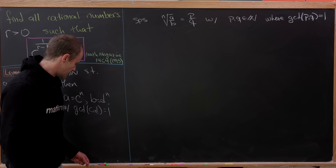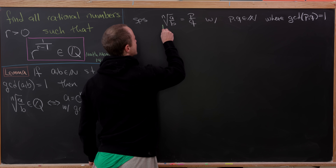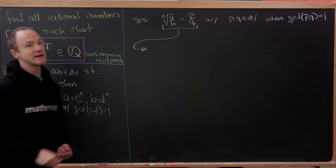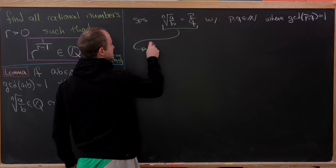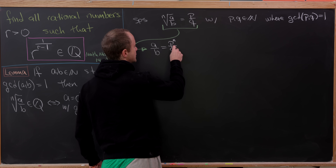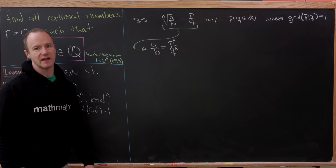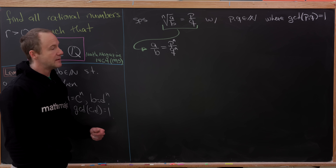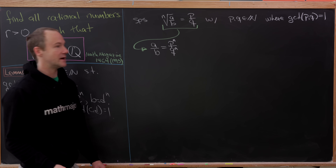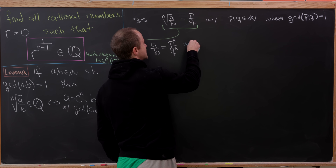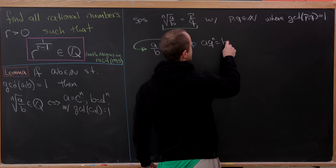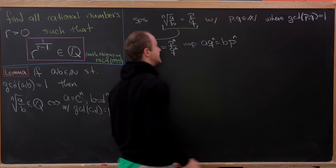We can take this defining equation of p and q and raise it to the nth power. That gives us a over b is equal to p to the n over q to the n. We might be tempted to immediately say that a equals p to the n and b equals q to the n, but we can't do that quite yet. Let's cross multiply to get an equation within the integers: a times q to the n is equal to b times p to the n.